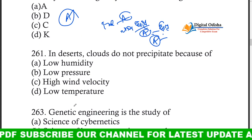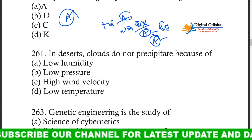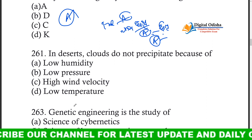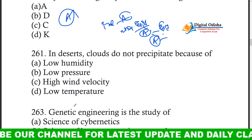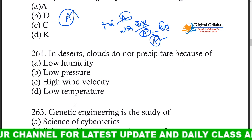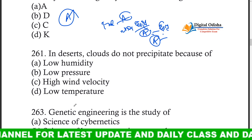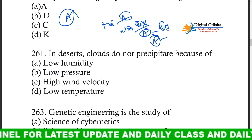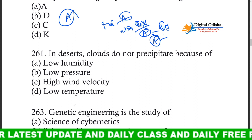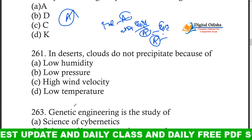In deserts, clouds do not precipitate because of low humidity. Options were: low humidity, low pressure, high wind velocity, low temperature. The answer is low humidity.